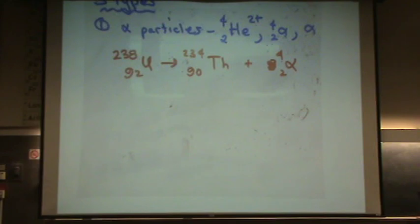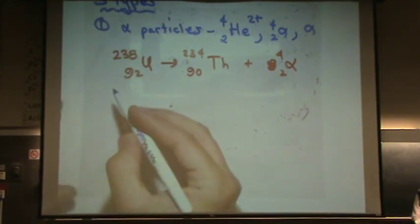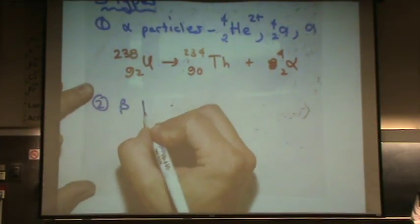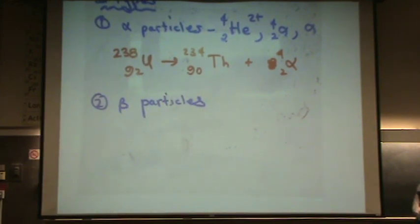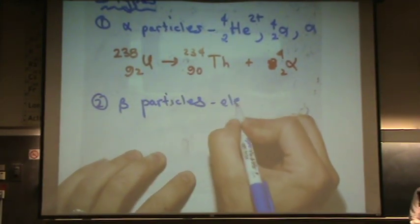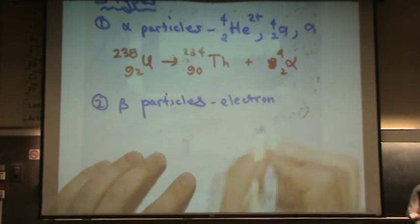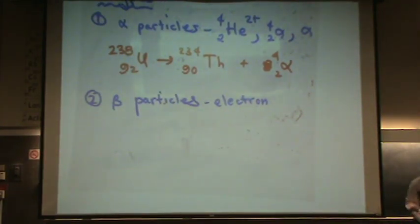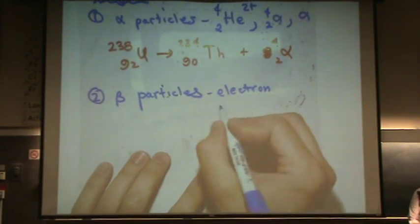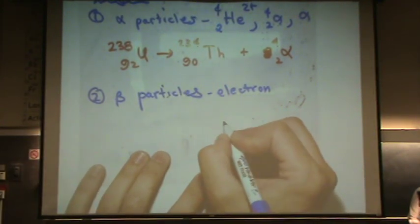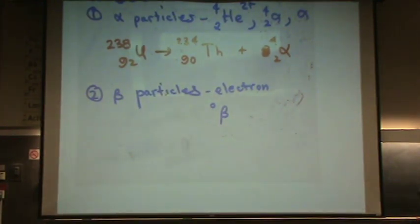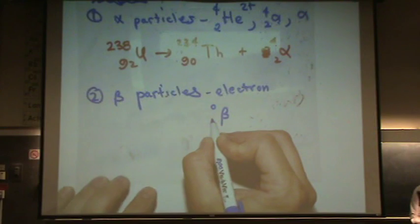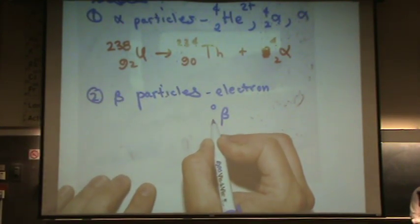The second kind of, or second type of radiation, beta particles. A beta particle is an electron. So an electron can be given off in ionizing power. And that's written, can be written in a couple different ways. Usually beta, with a zero here, because the electron has no protons and neutrons. And remember this number down here represents a number of protons.